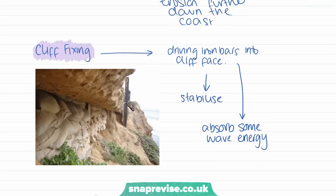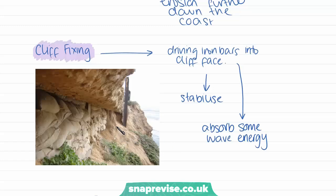Cliff fixing is when iron bars are driven into the cliff face to stabilise the cliff and absorb some of the wave energy when waves hit the cliffs, stopping erosion of the cliffs.